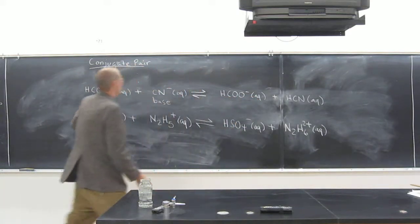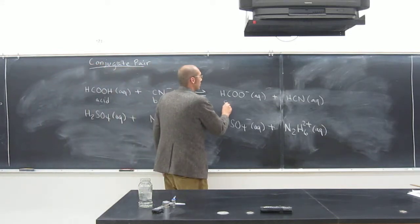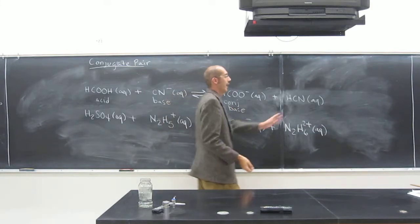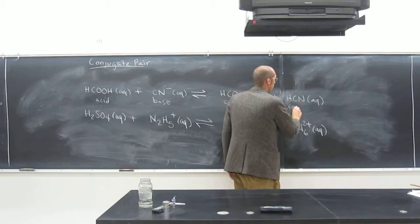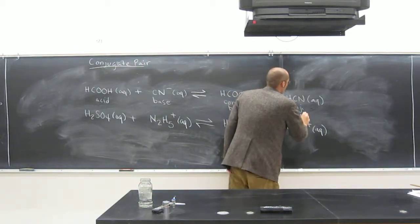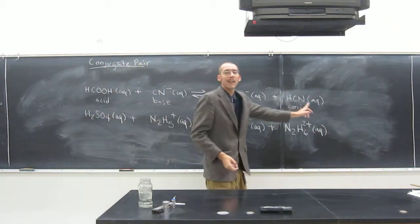So that must have been acid then, because acids lose protons. So then that must mean this is the conjugate base. And then of course this is the conjugate acid since it gained the proton. You can tell that from looking here, CN minus and comparing that to HCN.